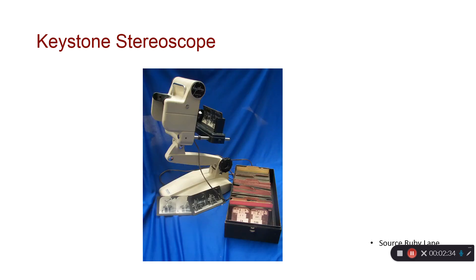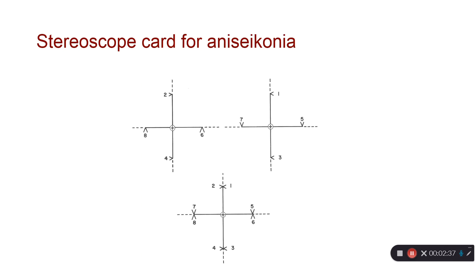Similarly, a keystone stereoscope does similar things where you can measure the amount of magnification difference between the two eyes. In this case, two images are equally placed, and you move the spots until they're lined up. Because of the magnification differences, you can then read off the number to see how large the magnification difference is between the two eyes.